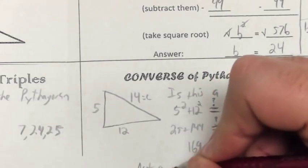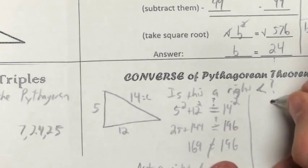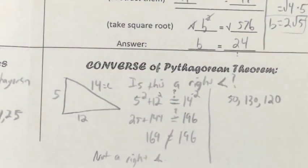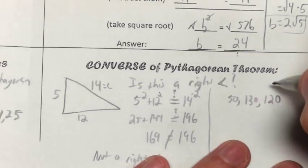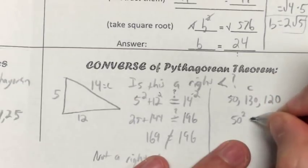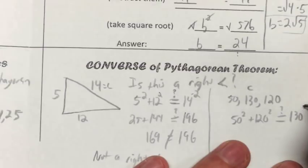So this is not a right triangle. Another one you could get is we give you the side lengths of 50, 130, and 120. Now, we're going to test this and see. We look at the largest one, which is 130. That one's got to be C. So we've got 50² + 120² question equals 130².